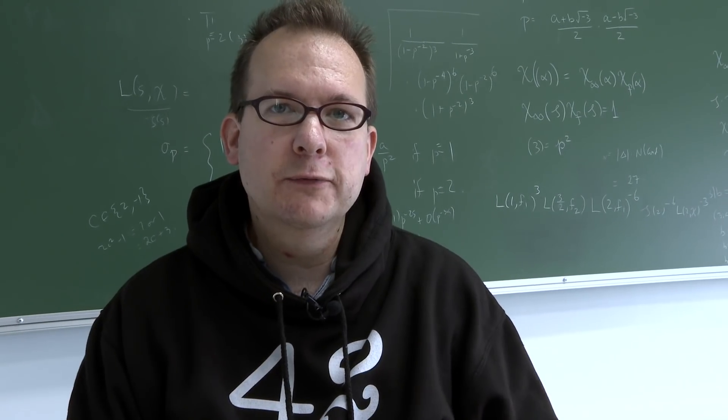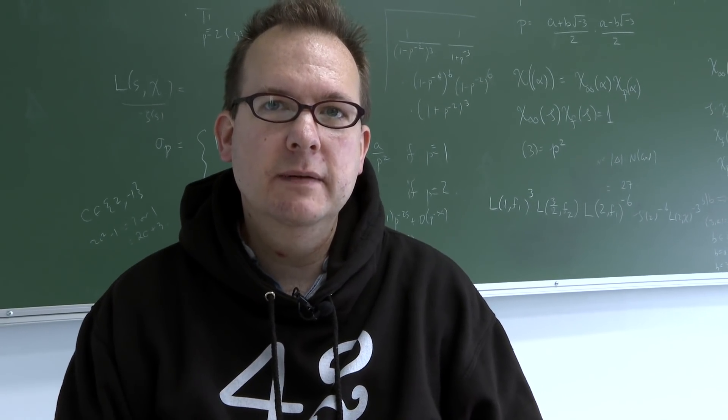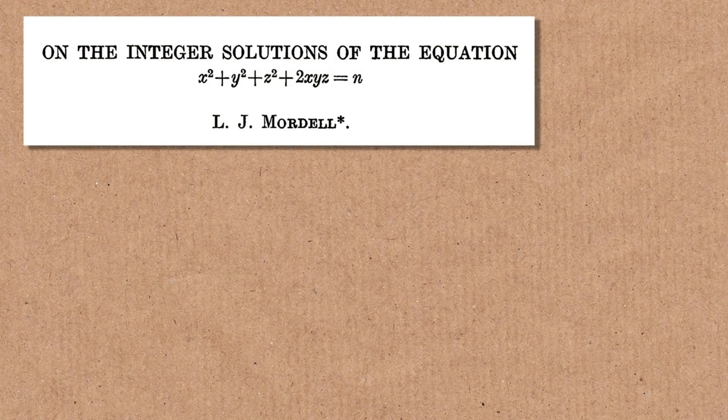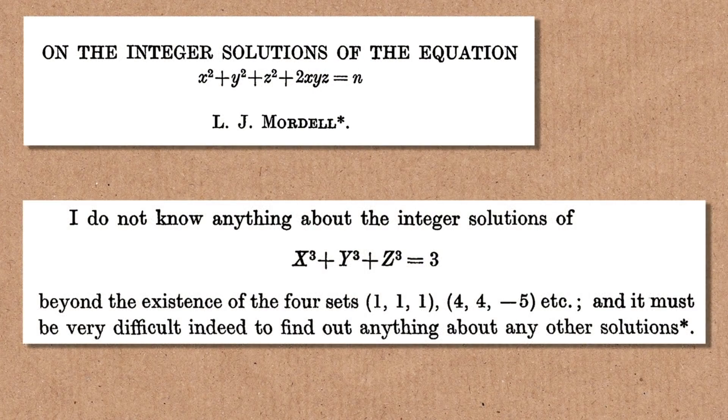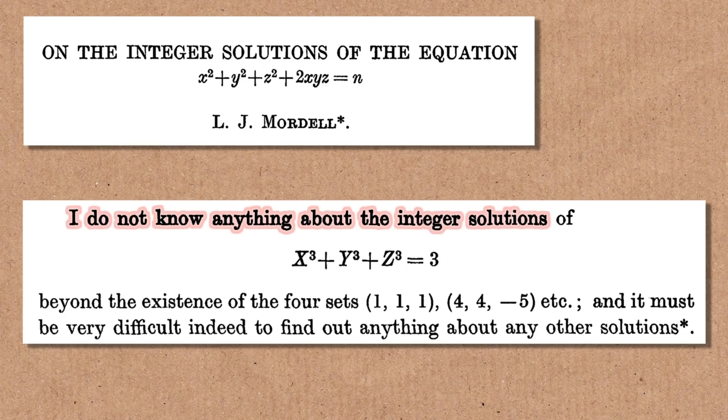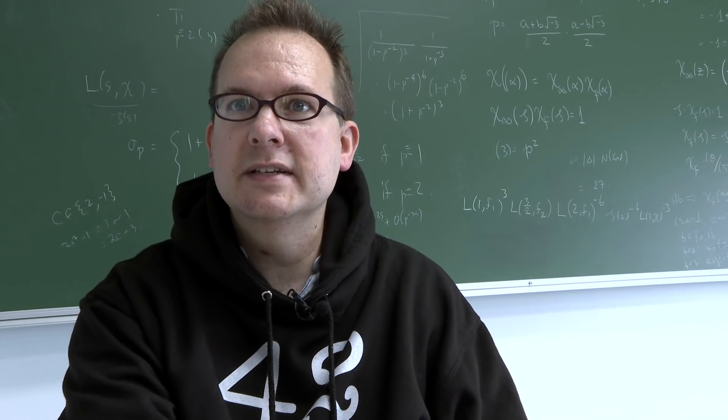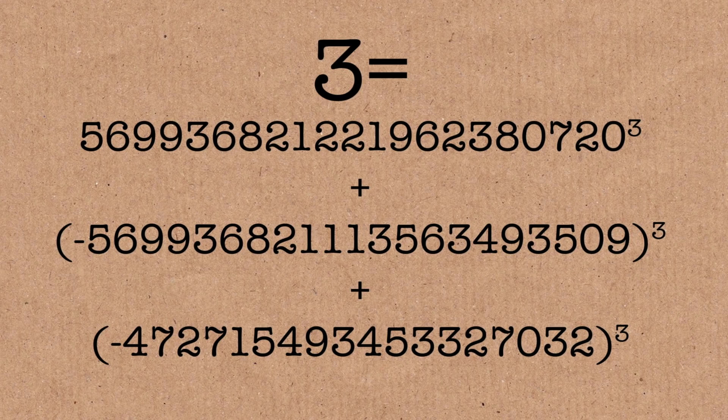This was the problem that kicked it all off. So it was in 1953 that Mordell asked, kind of as an offhand remark actually in the middle of a paper about something else. He says, I don't know anything about the solutions of this problem other than the two easy ones. And it must be very hard indeed to say anything about other possible solutions. That turned out to be an understatement because it took 66 years to find the next one.